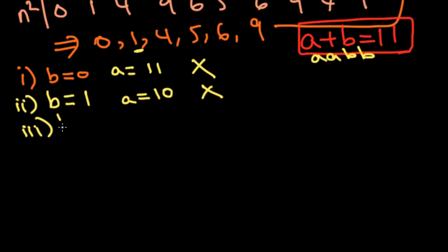Third case, B equals 4, then A will equal 7. And then our four digit perfect square would be 7744. And if you calculate this out, it's 88². So that's one answer that's acceptable.